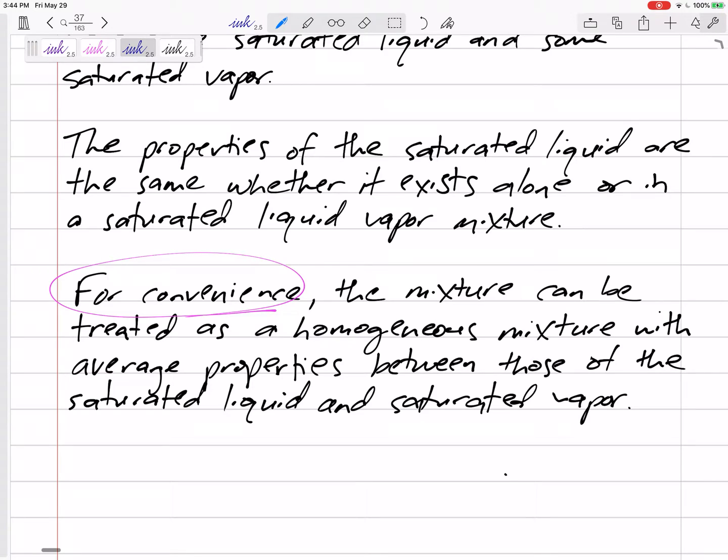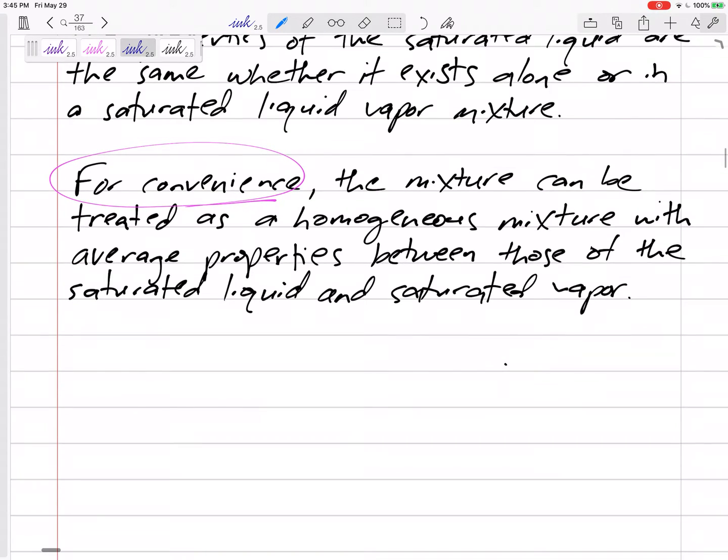The mixture can be treated as a homogeneous mixture that has property in between the F property and the G property. So what is really true is that it has some liquid at the saturated liquid properties and some vapor at the saturated vapor properties, but we're going to assume that it's homogeneous at properties in between liquid and vapor. For instance, let's look at specific volume V.